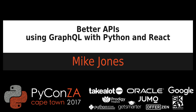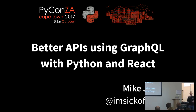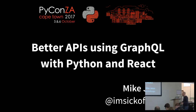Good afternoon, everyone. Hope you enjoyed lunch. Thanks for coming back. I'm not going to do a long introduction. Here is Mike Jones. His Twitter profile says that he's a dad of four. During his day job, he helps agricultural employers protect their employees, which sounds really interesting. He's going to be talking about building better APIs using GraphQL with Python and React. Here's Mike.